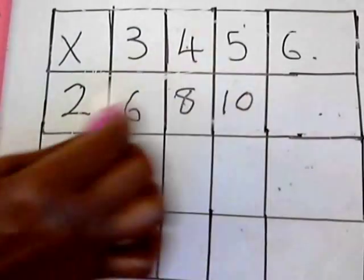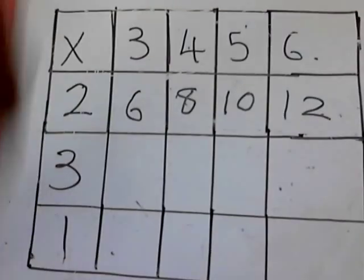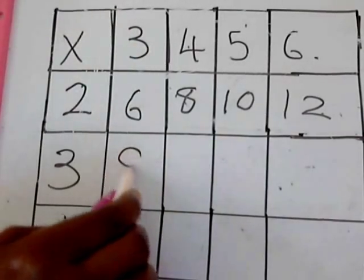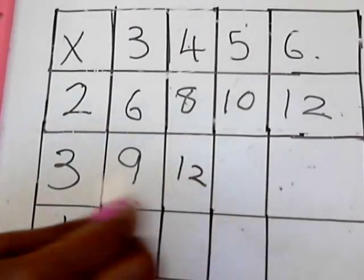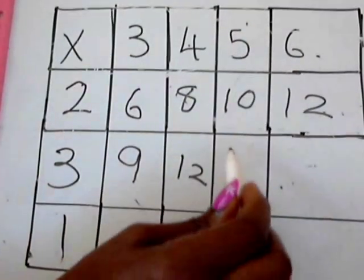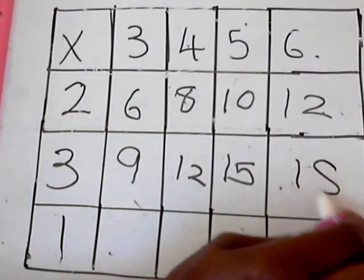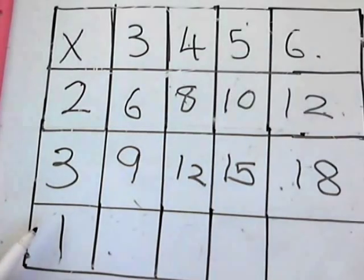2 times 6 gives us 12. Then we go to the next row: 3 times 3 is 9, 3 times 4 is 12, 3 times 5 is 15, 3 times 6 is 18. You get it? Then we have the last row.